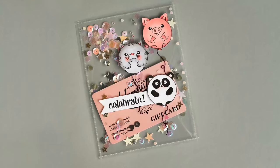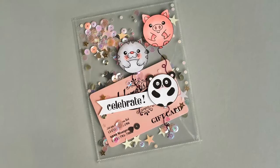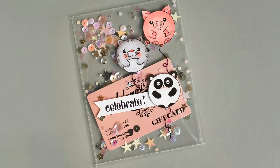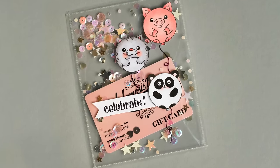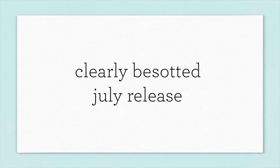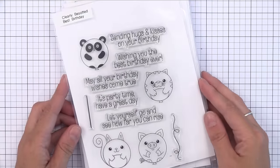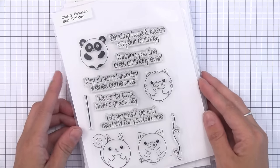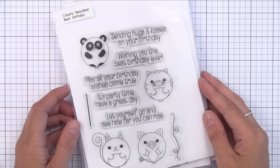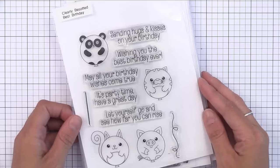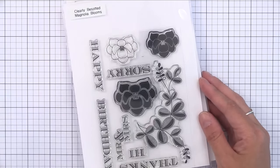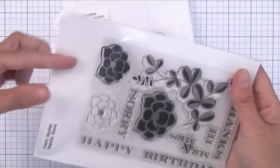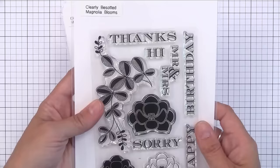That finishes up the card for today, but before we go I wanted to give you a closer look at the newest release from Clearly Besotted. Clearly Besotted is one of my favorite stamp companies, but I have never done a video showcasing them. So I wanted to do that here. What I like about Clearly Besotted is they have a look. All their stamps have a very similar look and it involves this very thin line on their images which I think makes it look very classy even when it's something that's fun like the one I just showed you.